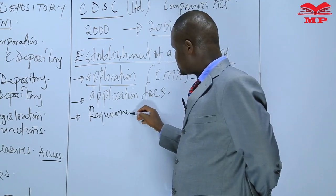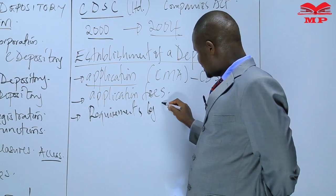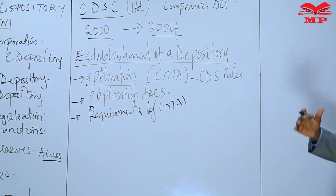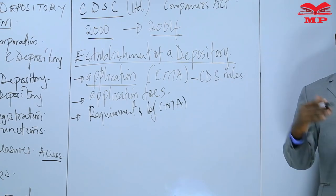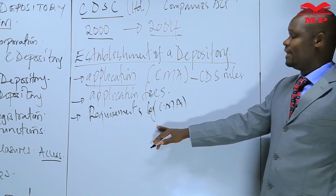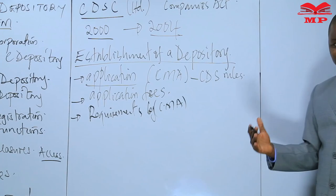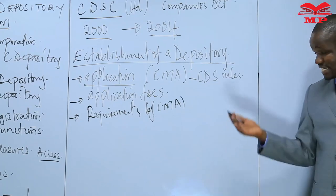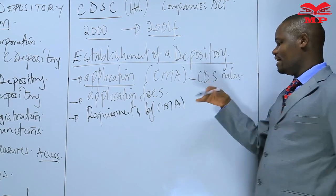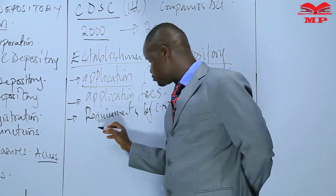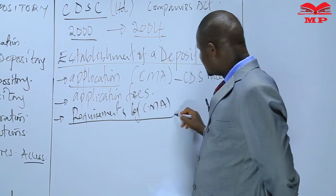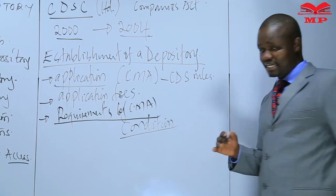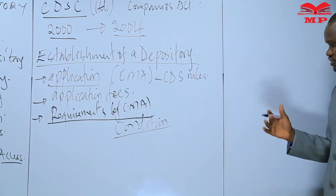This application must meet some requirements set out by the CMA. If the CMA is satisfied that the applicant has met the criteria, then they may proceed to grant a license to operate a depository. If the application does not meet the criteria, the license will not be granted. We may point out some of the conditions that the CMA is going to insist on.